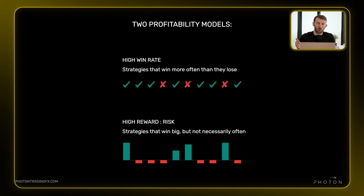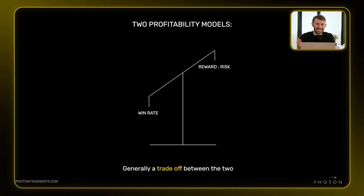Generally there are two profitability models: strategies with a high win rate that win far more often than they lose, or strategies with a high risk reward that go for those big winners and make up for more frequent small losers — like a classic trend following strategy. Generally it is a trade-off: you either go for high risk reward with a lower win rate, or you go for a higher win rate and sacrifice the risk to reward.